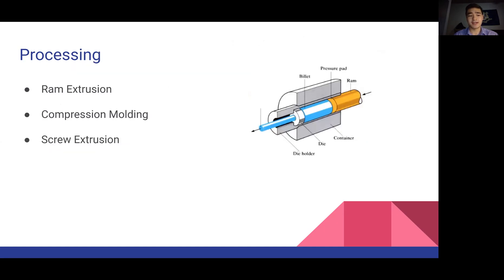Next, its processing. Ultra-high molecular weight polyethylene is processed with ram extrusion, compression molding, and screw extrusion. Ram extrusion can be seen in the image here on the right.